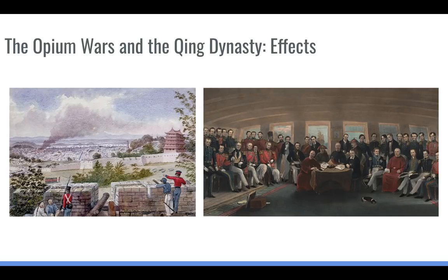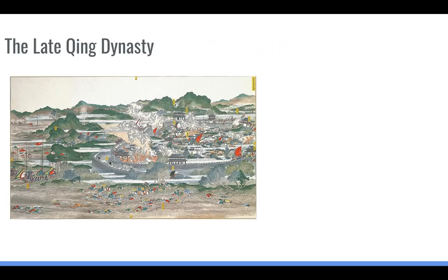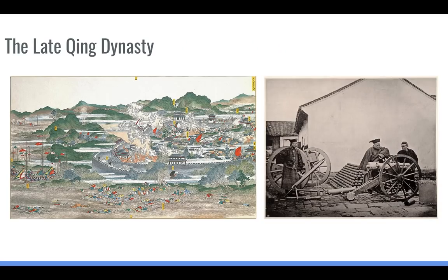Part of why China lost is that it had isolated itself and been passed up technologically and industrially by European powers. China was still proto-industrial, whereas Europe by the mid-1800s was right in the middle of the Industrial Revolution. As a result of these Opium Wars, Europeans actually gained much more influence in China than ever before, which signaled a weakening of the Qing dynasty under the Manchu.